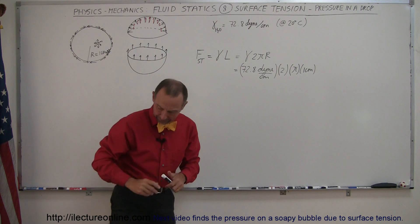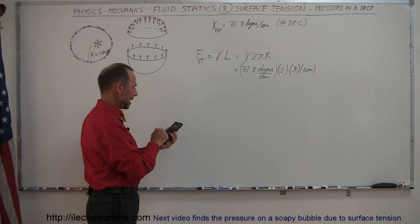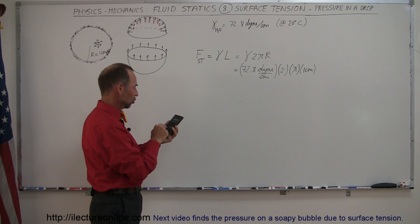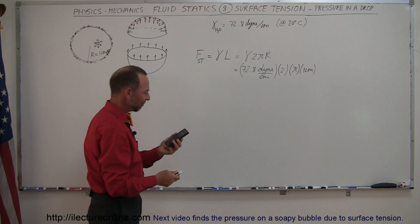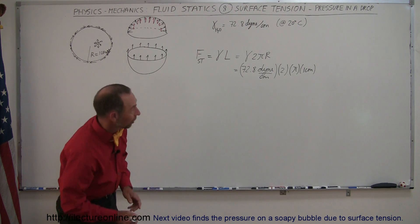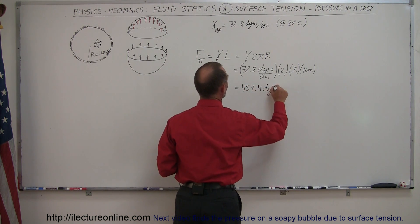And let's see, I need a calculator now because I'm ready to calculate this. So we have 72.8 times 2 times π times 1. And that gives us, so let's see here, 457.4 dynes.